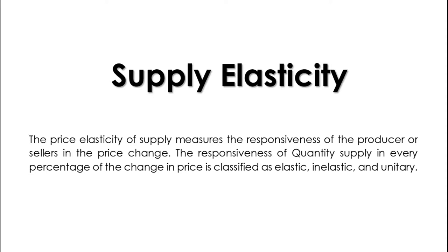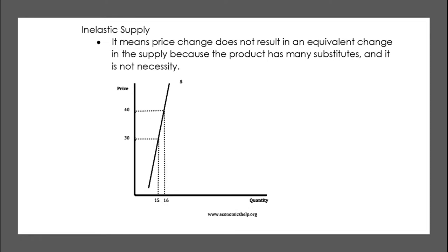The price elasticity of supply measures the responsiveness of the producer, sellers, or firms due to price change. The responsiveness of quantity supplied in every percentage change in price is classified as elastic, inelastic, and unitary. Inelastic supply means that price change does not result in an equivalent change in supply because the product has many substitutes and is not necessary. The inelastic supply curve is less than one in midpoint computation.